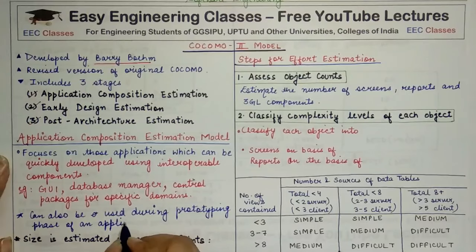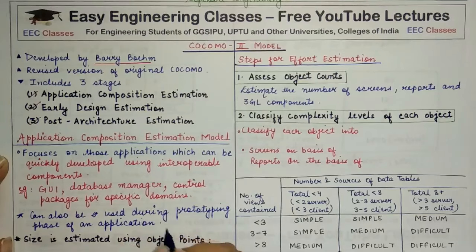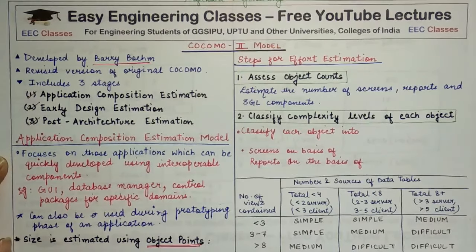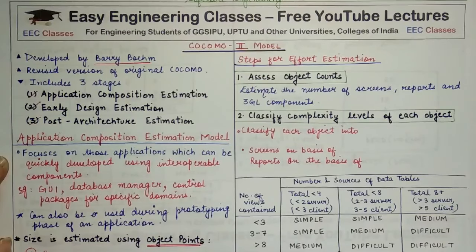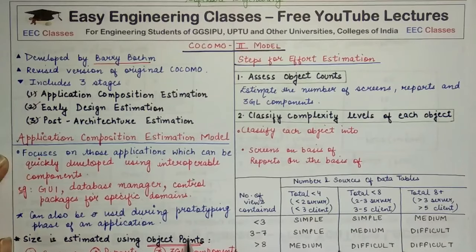The Application Composition Estimation Model basically works on object points — it estimates the size and effort based on object points. Object points are calculated through three different objects: first, screens (how many screens are in your software); second, reports (how many reports are generated or displayed as output); and third, 3GL components. These are the basic objects through which we calculate object points, and through these object points we calculate the size in COCOMO 2's Application Composition Estimation Model.